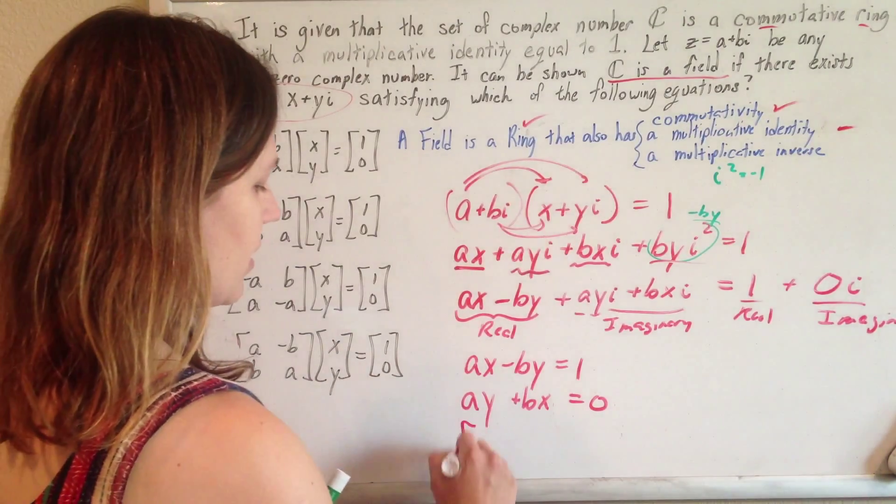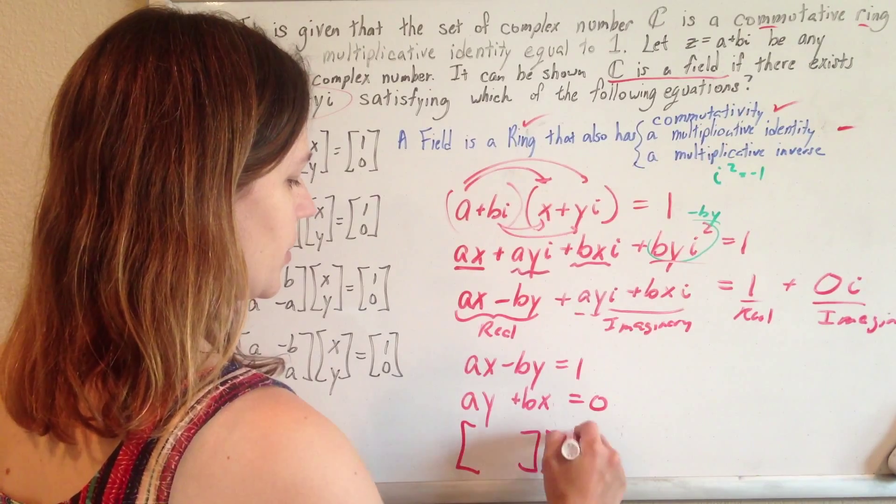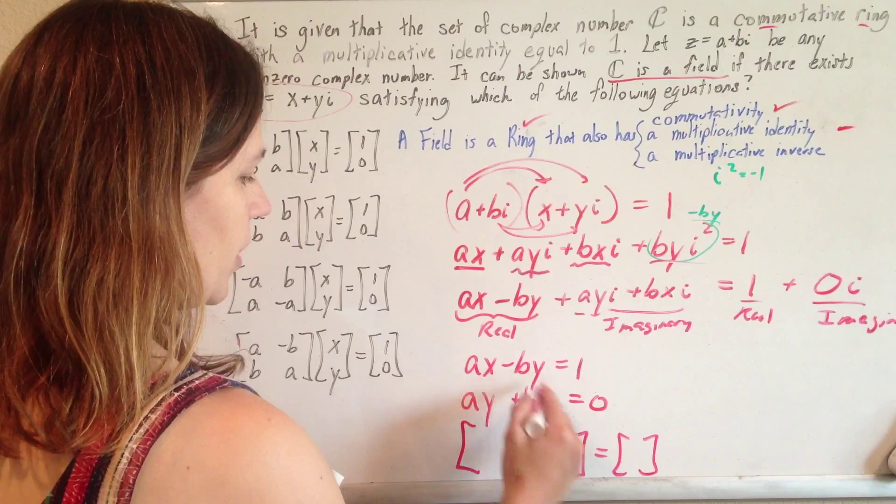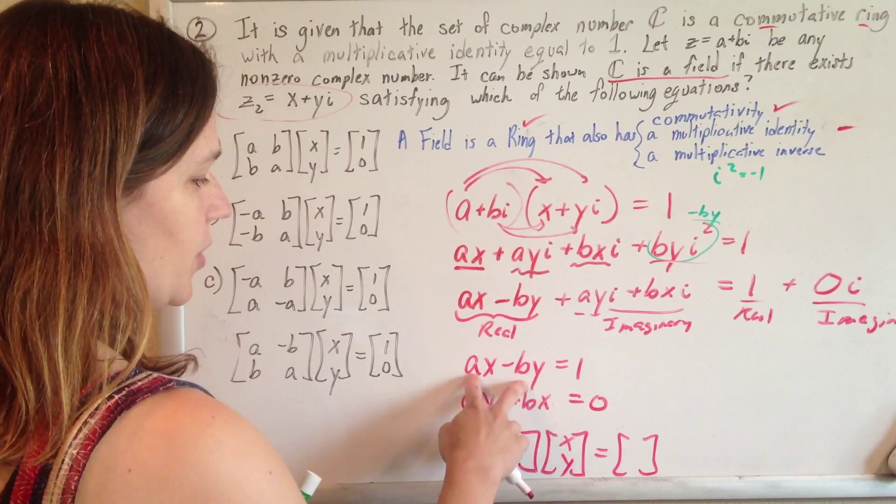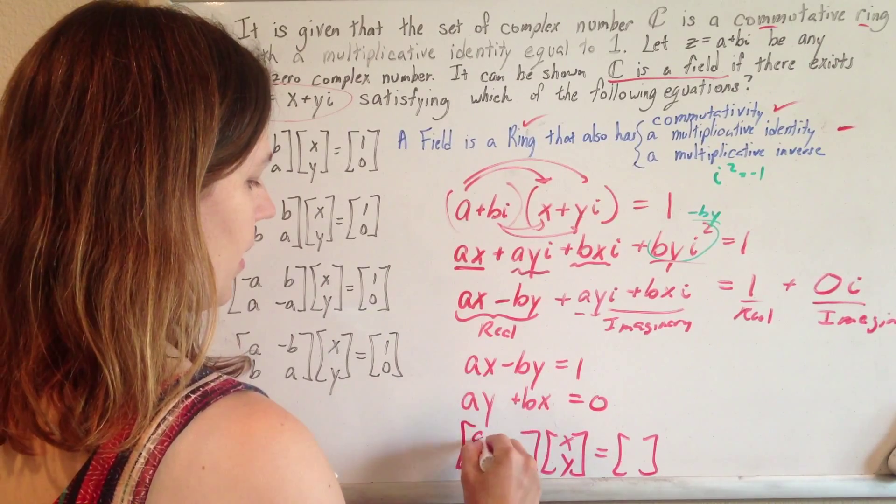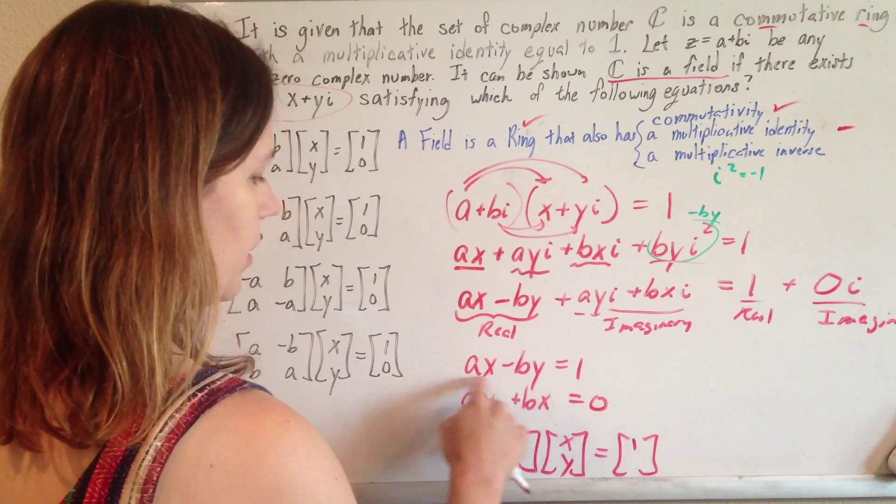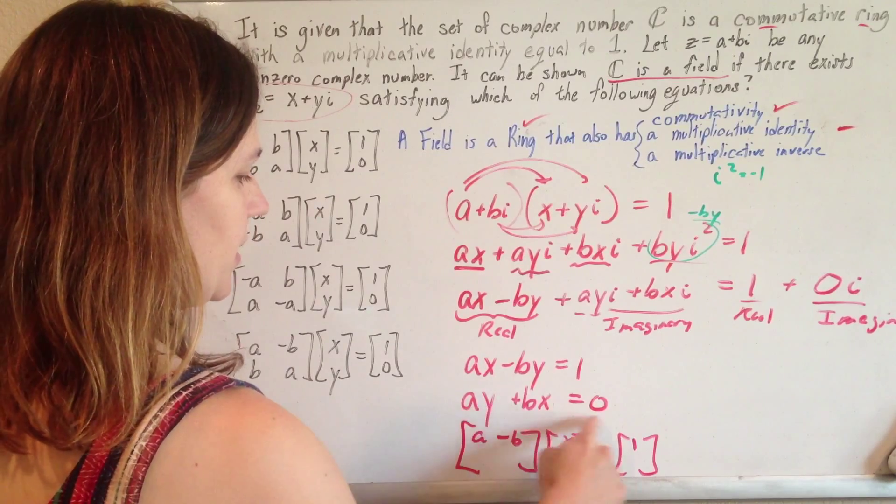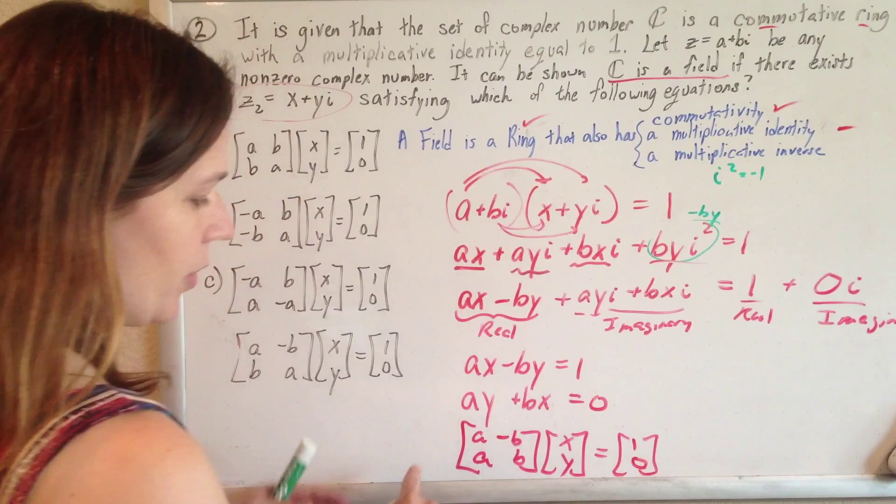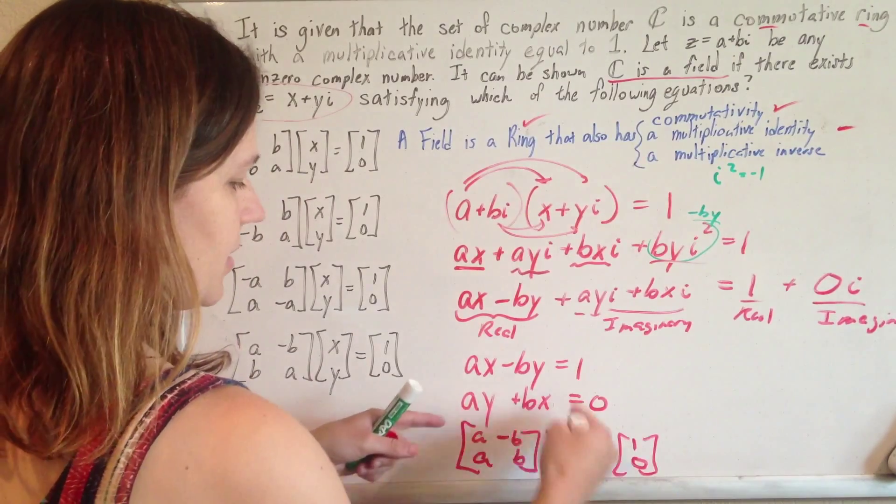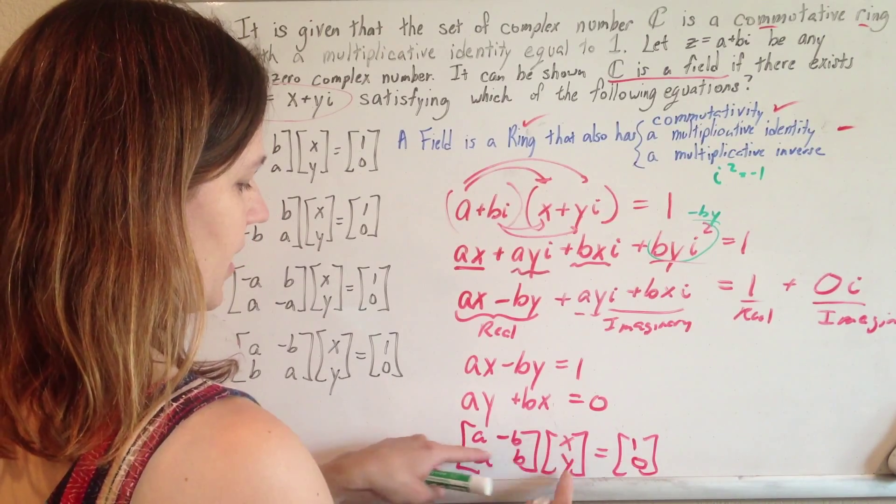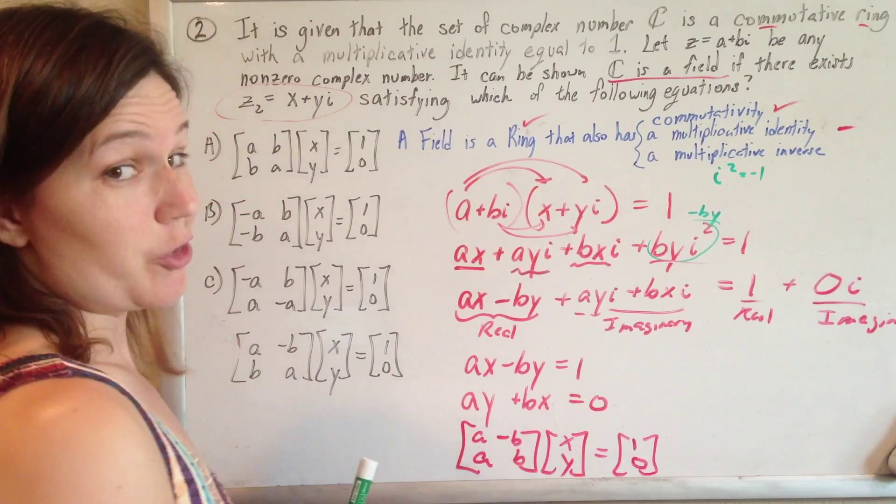And when you set this up into a matrix form, your two unknowns are this x and the y, and you just kind of write down your coefficients. So you have a and minus b and 1, and then you have a and b and 0. And you can always check it. You do your matrix multiplication, and so ax minus by is 1 and ax plus by is 0.